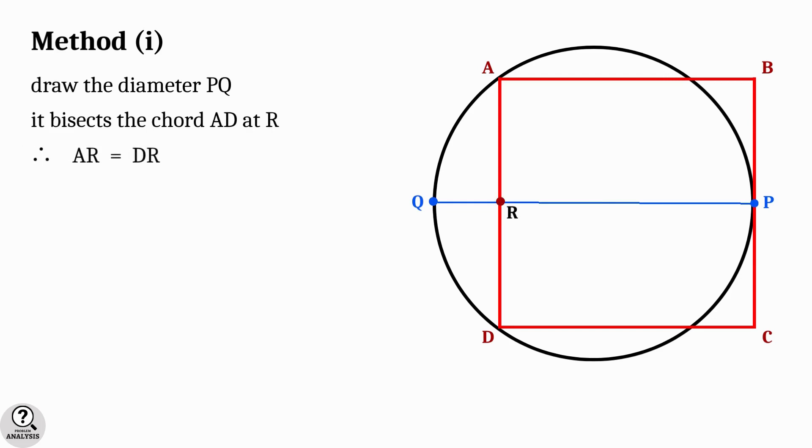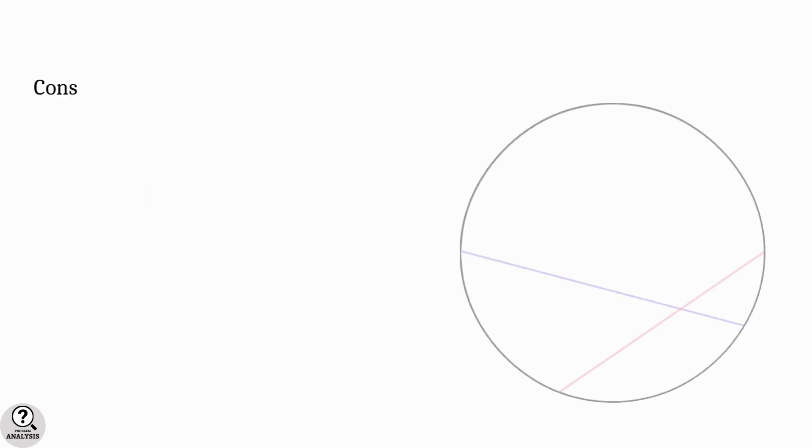Let's take it as a units. That implies AD equal to 2a, which is the side length of the square, and therefore PR also will be equal to 2a. Now we have to note an important property of circles and chords.